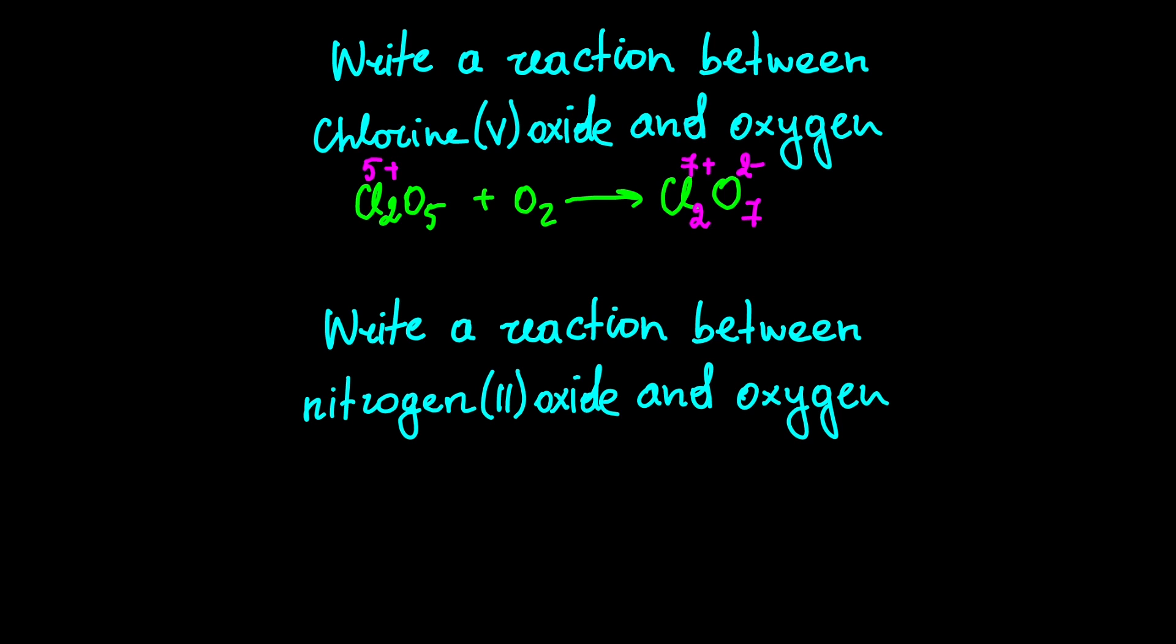Our last problem in today's lesson is a reaction between nitrogen two oxide and oxygen. Nitrogen is two plus, so after the reaction it must be four plus. The product chemical formula is NO2. If we write coefficient two in front of NO and NO2, we should have a perfectly balanced reaction.